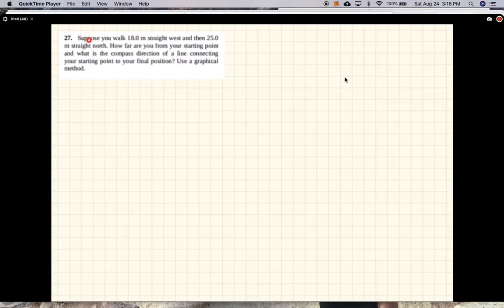Okay, so this problem says: suppose you walk 18 meters straight west and then 25 meters straight north. How far are you from your starting point, and what is the compass direction of a line connecting your starting point to your final position? Use a graphical method.